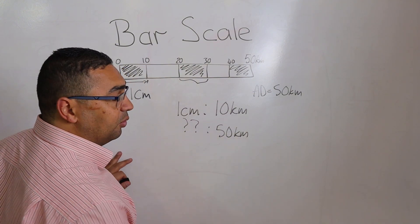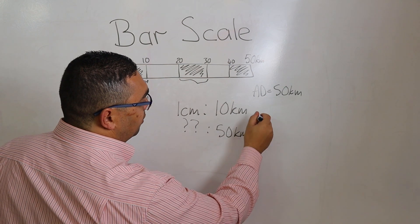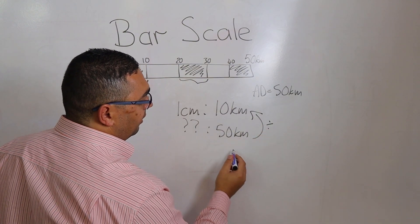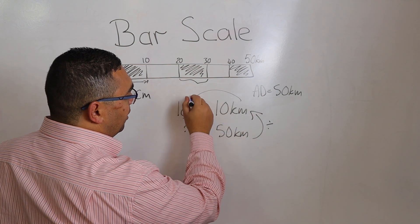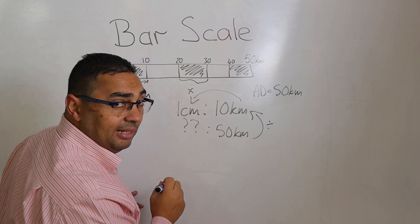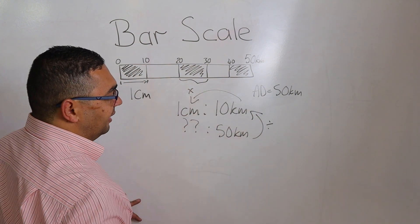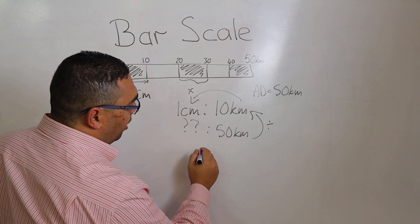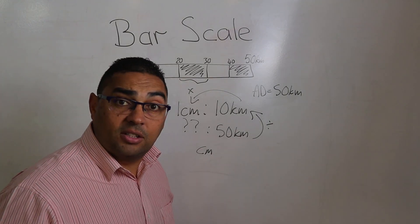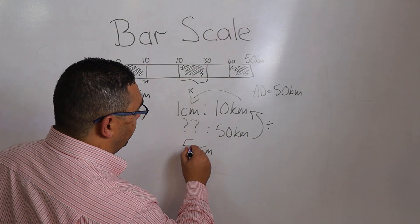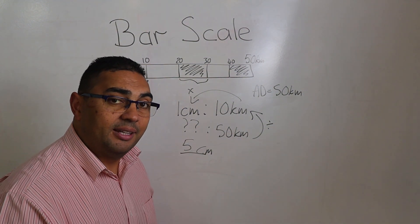So now, I'm going to do the reverse. I'm going to divide my 50 into the 10 kilometers. And then I'm going to multiply that by my one centimeter. And it's going to give me an answer in centimeters. And that's going to give me 5 centimeters.